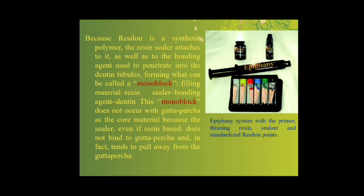The sealer used with this type of obturation is a resin-based sealer; an example is Epiphany sealer. It consists of a base and catalyst that are mixed, and this type of sealer may be self-cure or sometimes dual-cure — meaning the parts inside the canal are chemically cured and the coronal area can be cured by light. This technique strengthens the tooth and provides a sound obturation.